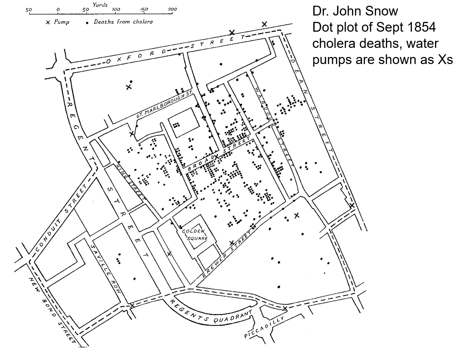He thought contaminated water might be the problem, so he put X's on his map where all the water pumps were — back when people used buckets at public pumps rather than having running water at home. You can see one water pump in the middle surrounded by deaths, while areas near other pumps had far fewer deaths. John Snow walked over and removed the handle from that pump so no one could use it, ending up saving many lives.